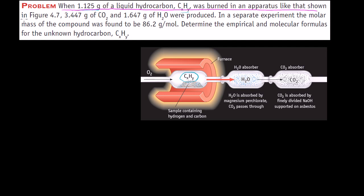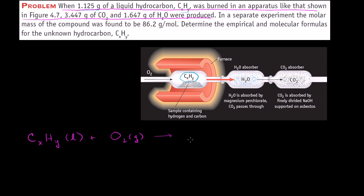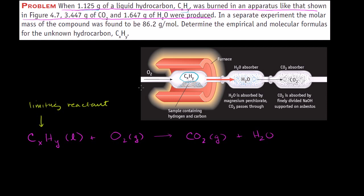They're saying that when we start off with that liquid hydrocarbon that has X carbons and Y hydrogens in it, in its liquid state, and we combust it using oxygen in its gaseous state, we produce carbon dioxide and water. You can't really balance this equation because you don't know how many carbons and hydrogens you have on the left-hand side. We're assuming we have an excess of oxygen — this hydrocarbon is the limiting reactant.